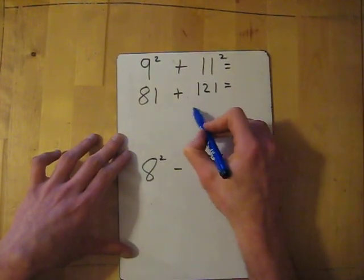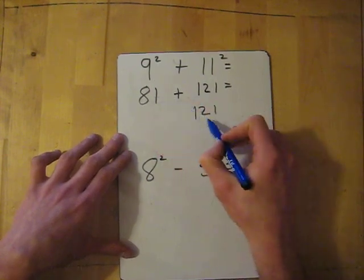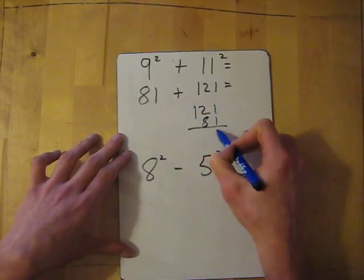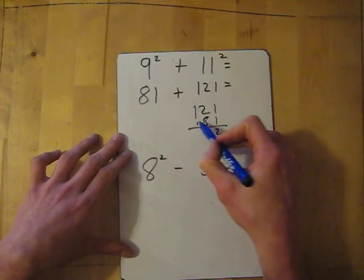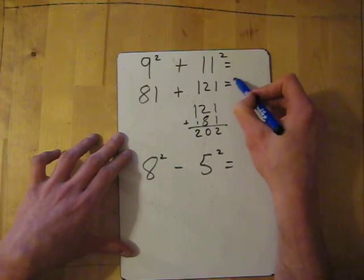So I'm going to line up my units: 81 and 121. Line up the units and add them together. 1 plus 1 is 2, 8 plus 2 is 10 carry the 1, plus 1 is 2. So my answer is 202.